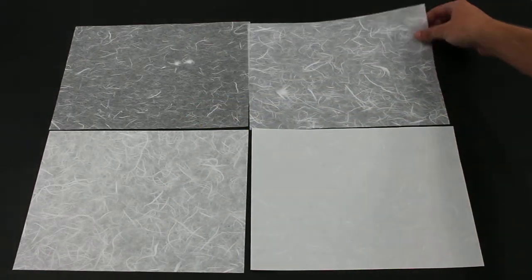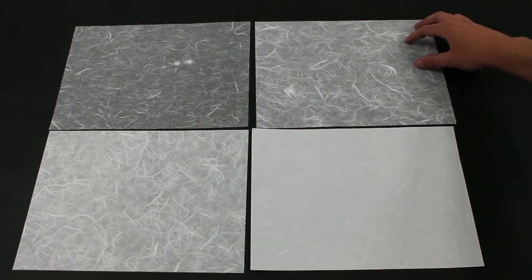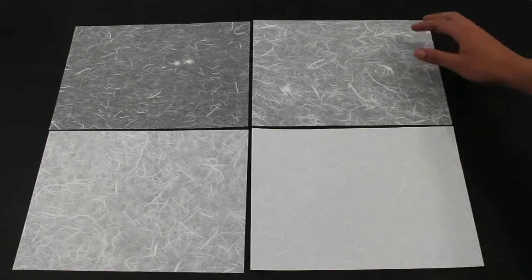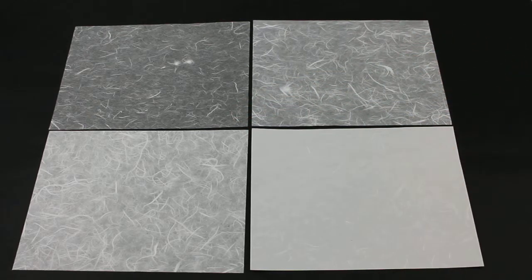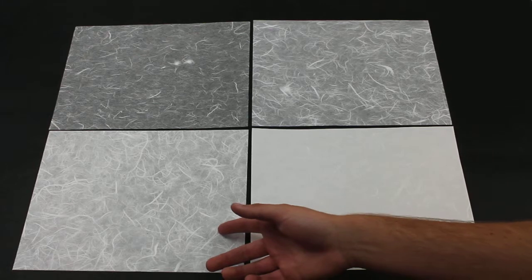We then have the 25 GSM where you can see the fibers in it on this black background. It's not as translucent as the 10 GSM but more translucent than the 40 GSM.